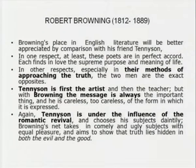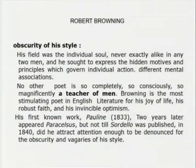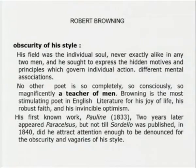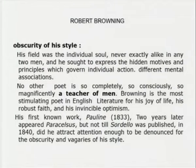Tennyson is under the influence of the Romantic revival and suggests his subjects daintily, whereas Browning's net takes in comely and ugly subjects with equal pleasure, and aims to show that truth lies hidden in both the evil and the good. Many see that Browning can be compared even with Shakespeare in the way that he analyzed human nature, the psychology of the mind and human actions. Though they are very dissimilar, many say that in the understanding of human nature, he is equal to almost Shakespeare. But it was the obscurity of his style that always earned him a little less popularity. His theme was the individual soul, never exactly alike in any two men — so varied and so deep — and he sought to express the hidden motives and principles which govern individual action.